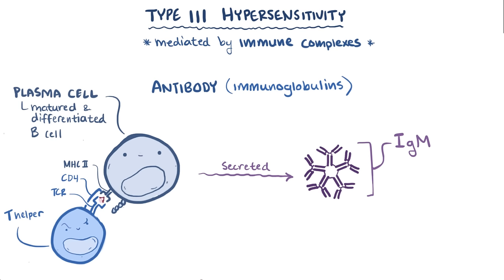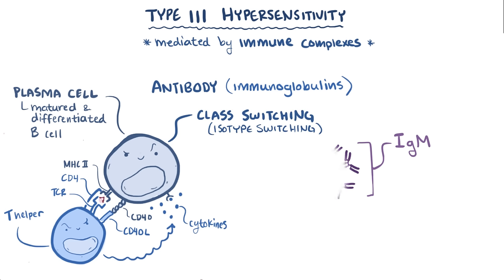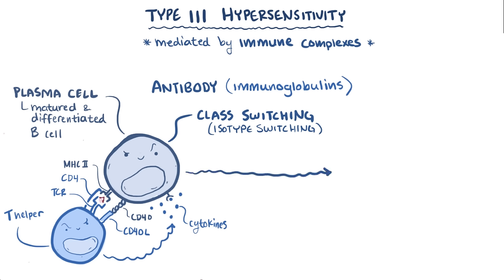The B cell CD40 also binds to the T cell CD40 ligand, and then the T cell releases cytokines, which result in B cell activation and class switching, or isotype switching, where it changes the type of antibodies it makes. In type III hypersensitivity reactions, B cells typically switch from making IgM to making IgG antibodies.